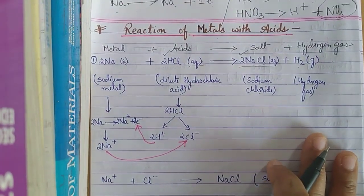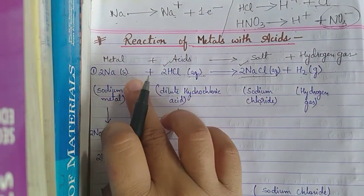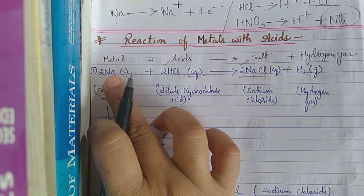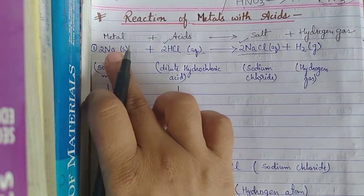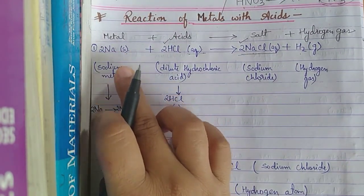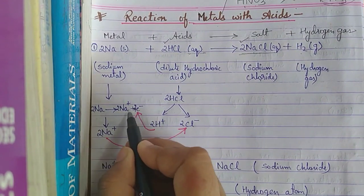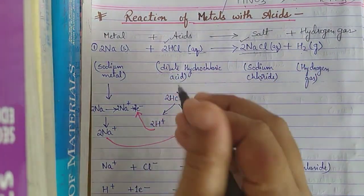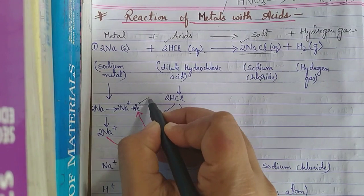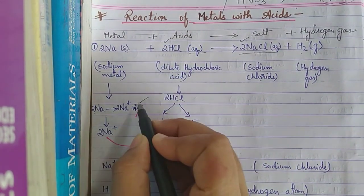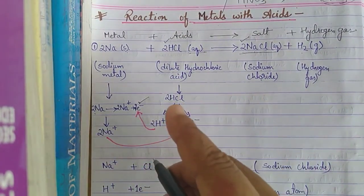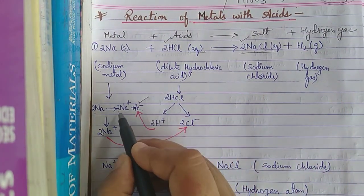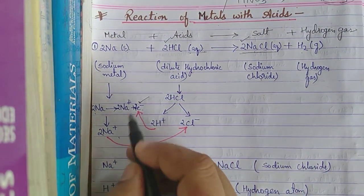Now combining all these ideas: there are two sodium atoms here, and each sodium atom releases one electron — so two electrons in total are released, and two Na⁺ ions are formed.